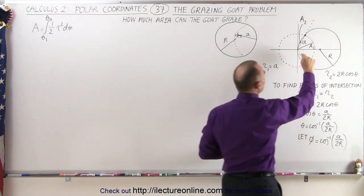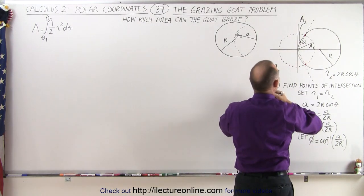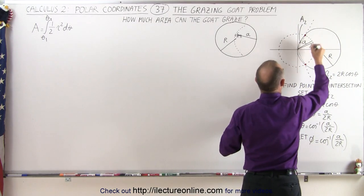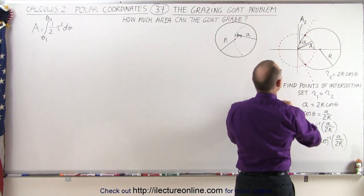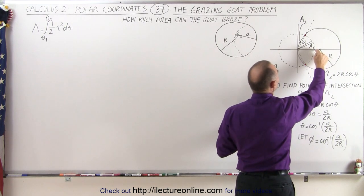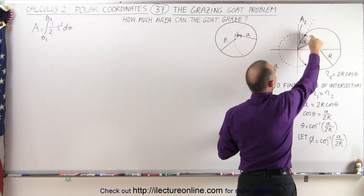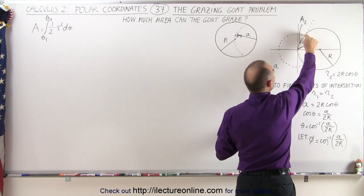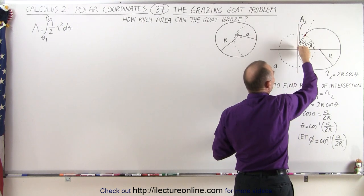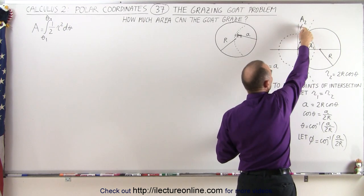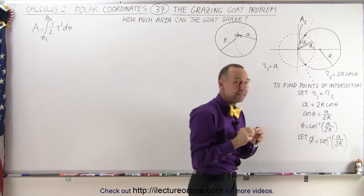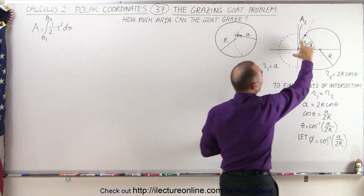Now, if we're going to compute a small area element right here, we need to integrate from here all the way to where the two curves meet. There's an additional small area — which we call A2 — that has to be done differently.